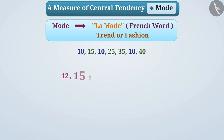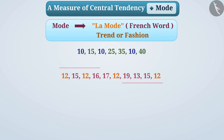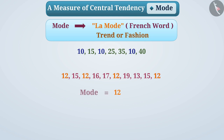If we talk about these observations, here 12 is the most frequent. We can say that 12 is most prevalent among this group of observations, i.e., 12 is the mode of these observations.